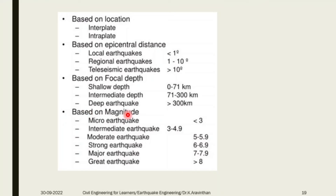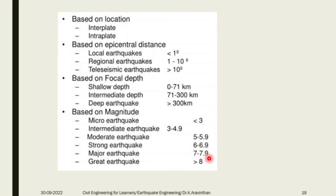Based on magnitude: micro earthquakes can be sensed by dogs. Intermediate earthquakes are around 3 to 4.9 magnitude and can be observed slightly in buildings by humans. Moderate earthquakes are 5 to 5.9. Strong earthquakes are 6 to 6.9 and make property damage. Above that, major earthquakes are 7 to 7.9. Around 180 earthquakes occur throughout the world continuously year by year, and we are still suffering due to them.